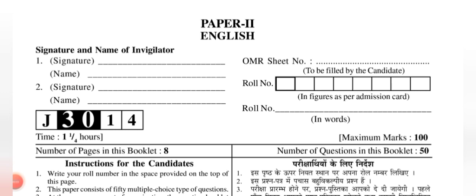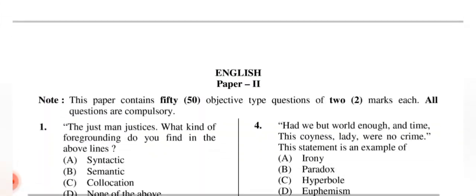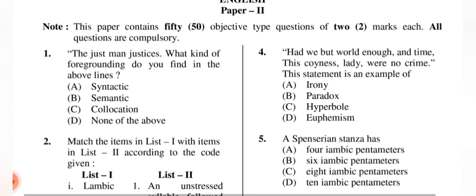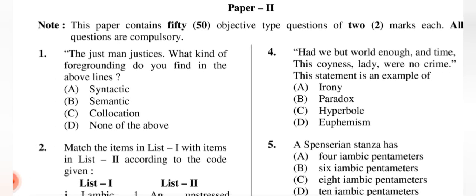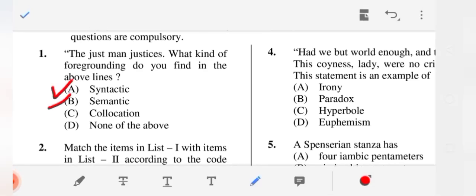Hello viewers, today I will try to solve questions from UGC NET 2014 June Paper 2. Question 1: 'The just man justices' — what kind of foregrounding do you find in these lines? According to me, the correct options are (A) and (B), but since you must choose only one, please verify the answer.